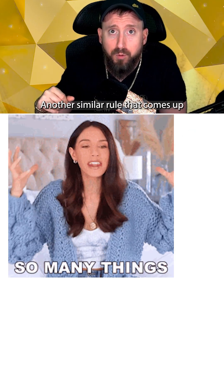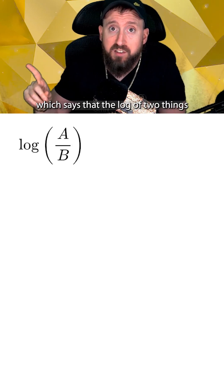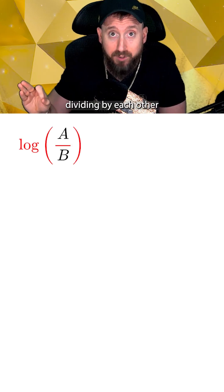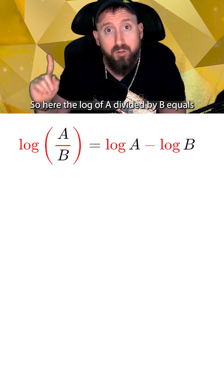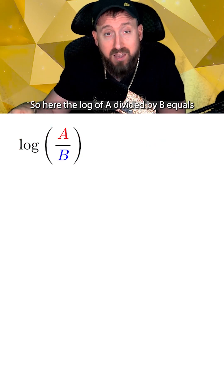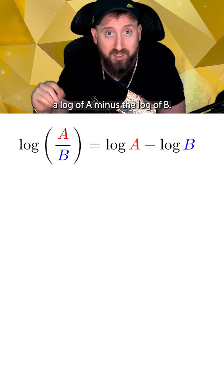Another similar rule that comes up is the quotient rule, which says that the log of two things dividing by each other can be broken up into two separate logs that are subtracting each other. So here the log of a divided by b equals the log of a minus the log of b.